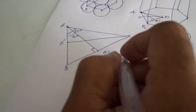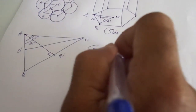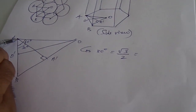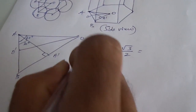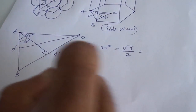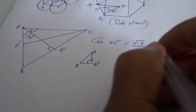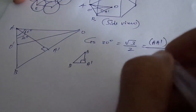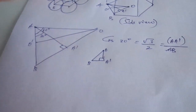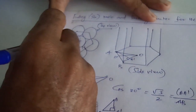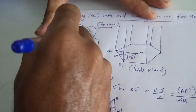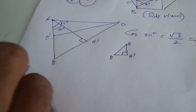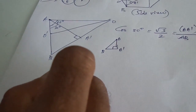Cos 30 degrees equals root 3 by 2 from the figure. In this right angle triangle with vertices A, Adash, and B — cos theta at 30 degrees gives adjacent side A-Adash divided by hypotenuse AB. Here AB equals 2R, which is one radius plus another radius. So AB equals 2R, which equals the lattice constant a, meaning R equals a/2.